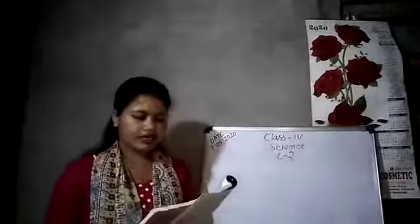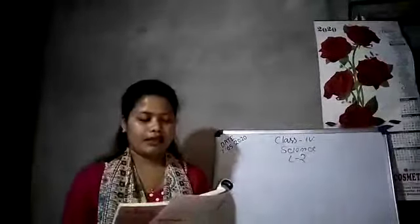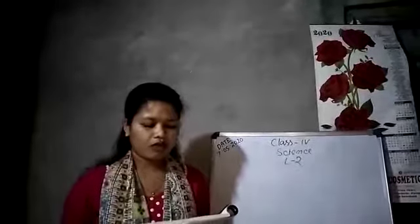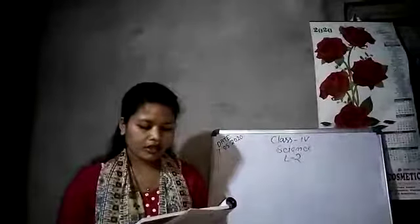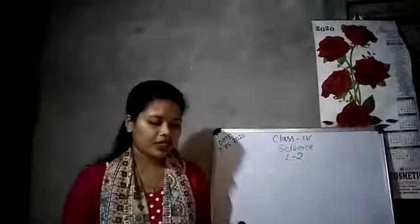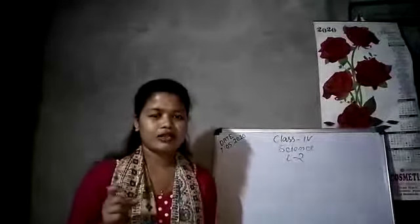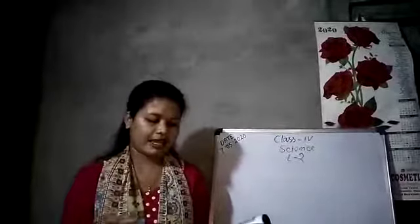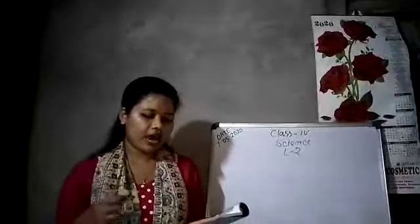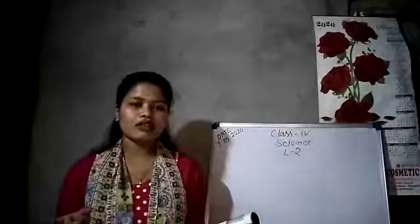Today we will start from the structure of a tooth, which is on page number 11. Teeth are fixed in the soft gums of the jaw. The part of the tooth which is outside the gum is known as the crown, and the inside of the gums is known as the root.